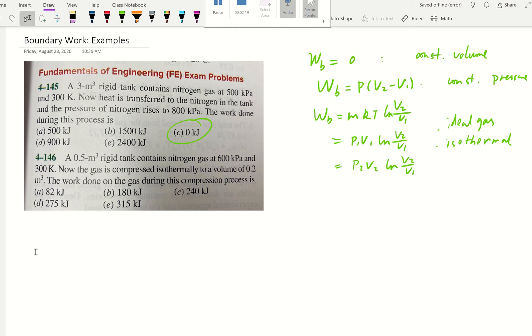Now let's look at the second example. They give us the volume also. This is nitrogen gas. We know nitrogen is going to be ideal gas. They give us initial pressure is 600 kilopascal and initial temperature is 300 Kelvin. Now it's compressed isothermal.